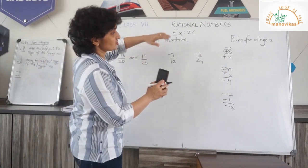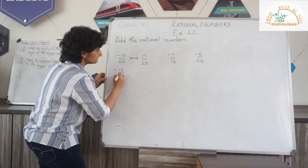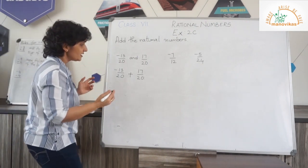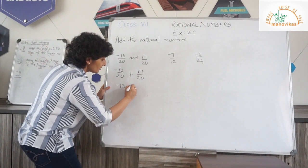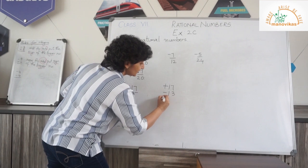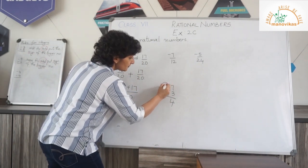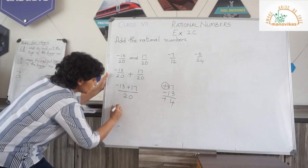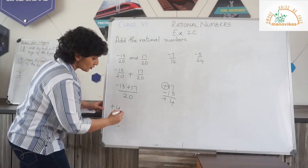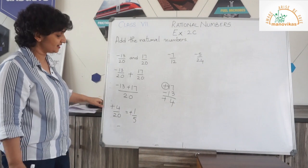Now let us come back to addition of rational numbers. I have: add minus 13 upon 20 plus 17 upon 20. First, I need to look at my denominators — both are the same. So it is minus 13 plus 17 upon 20. Different family: subtract, so 17 minus 13 is plus 4. Put the sign of the bigger number. So I get plus 4 upon 20. I do not leave my rational number this way, so let's bring it to standard form: 4 upon 20 simplifies as 1 upon 5.